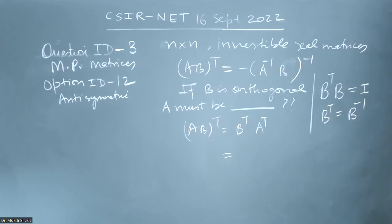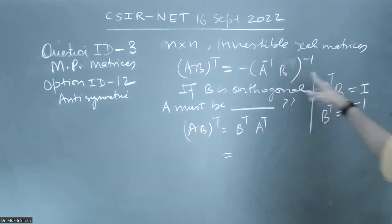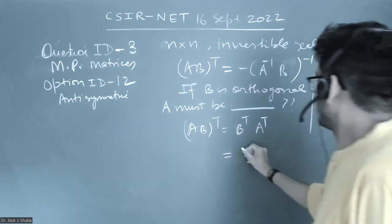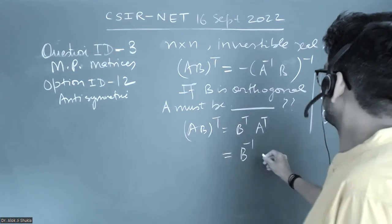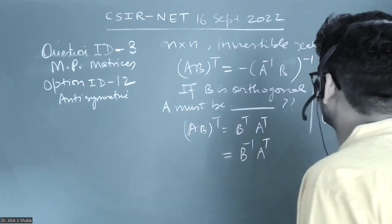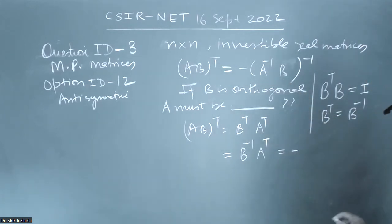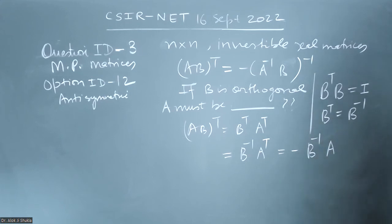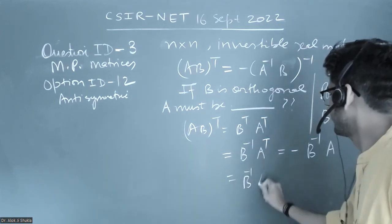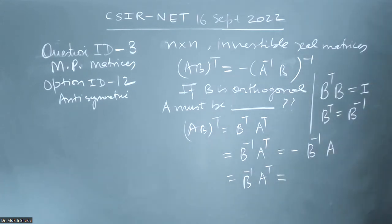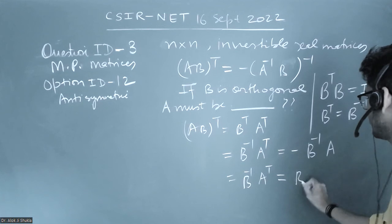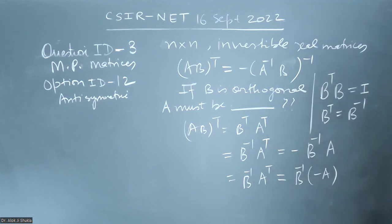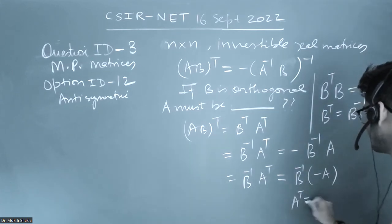If I apply this to (A inverse B) whole inverse, B^T becomes B inverse and we write A^T. In this case it becomes minus B inverse and A inverse of inverse, which equals A. So A^T is equal to minus of A.